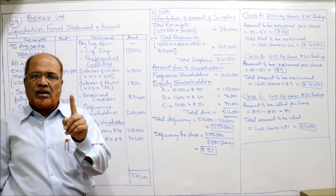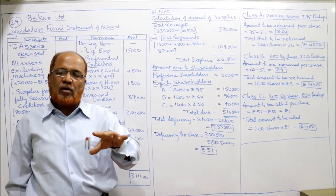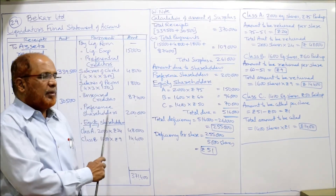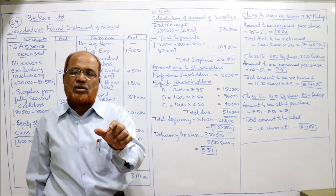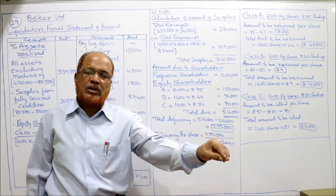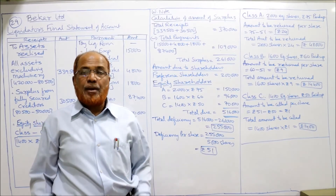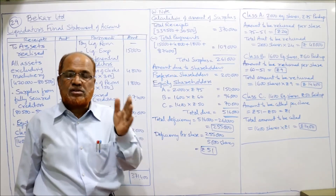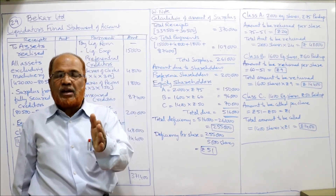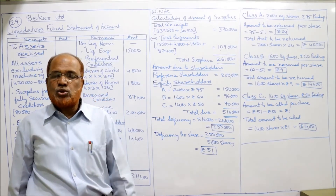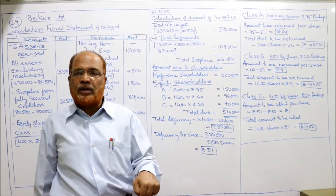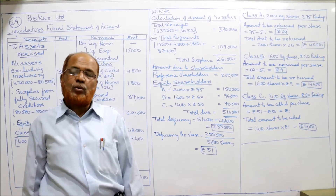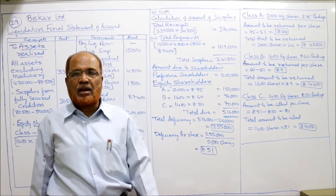If there were only one class of equity shares, the 2,61,000 surplus would be simple: 2,00,000 to preference shareholders and the remaining 61,000 to equity shareholders. But here the problem is more complex — we have three classes of shares: Class A, Class B and Class C. For every class, the paid-up value of the share is different, so it is the responsibility of the liquidator to make equitable adjustments between the different categories of equity shareholders.